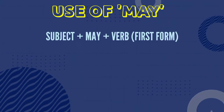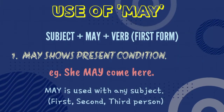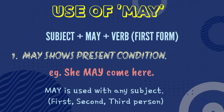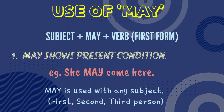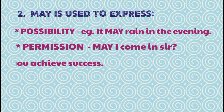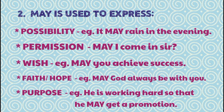Use of May: In a sentence, first write the subject, then may, then the first form of verb. May shows present condition — she may come here. May is used with any subject — first, second, or third person. May is used to express possibility — it may rain in the evening. Permission — may I come and serve? Wish — may you achieve success. Faith or hope — may God always be with you.